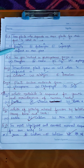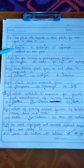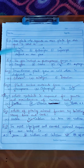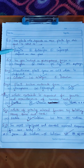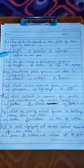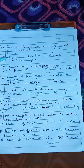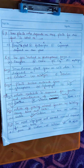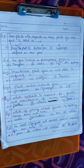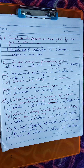Question eight: those plants which depend on other plants for their food are called — options: parasite, autotroph, saprotroph. The answer is parasite. We know that a parasite depends on others for food. For example, a tick depends on a buffalo and feeds on its body to get nutrition. Plants that depend on other plants for food are called parasitic plants.